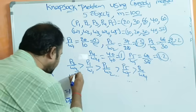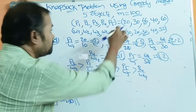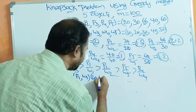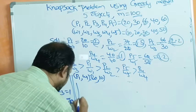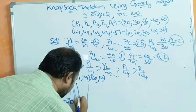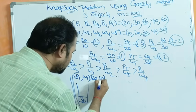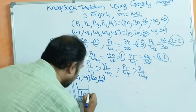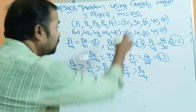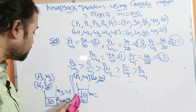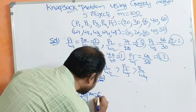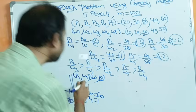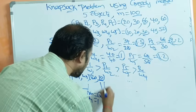Next object is the first object, P1/W1. Profit is 20 and weight is 10. The remaining size is 70 kg, and the object weighs 10 kg, so it can be fully placed. Remaining size becomes 70 − 10 = 60 kg, so x1 equals 1.